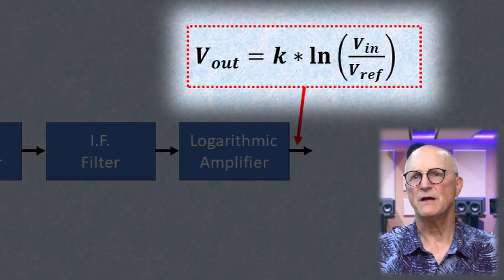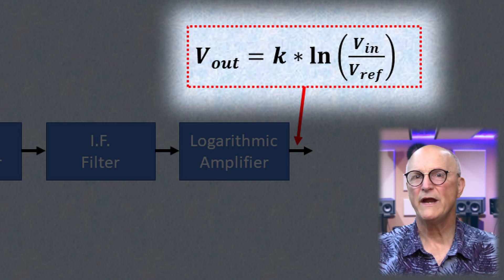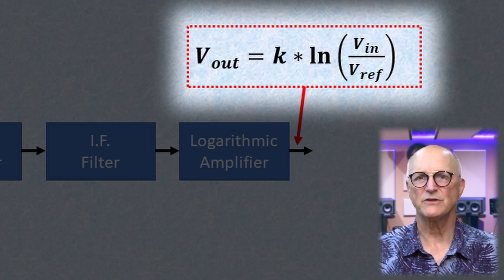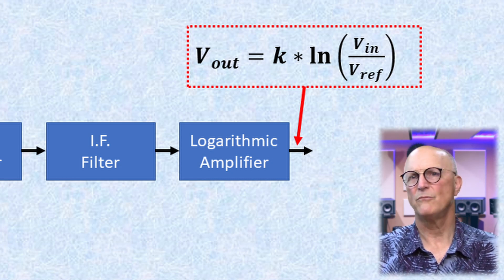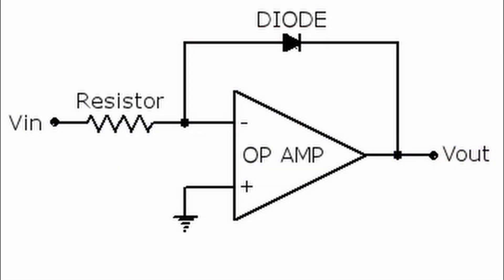Low amplitude signals are amplified more than higher amplitude signals. And believe it or not, this can be accomplished in a somewhat non-precise way by using an op-amp with a diode as a feedback resistor.